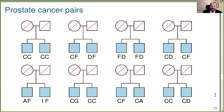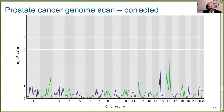If we fix that, the corrected results look like this. There's a hint of association on a couple of chromosomes — 15 and 16, maybe two — but nothing nearly so dramatic as what I'd initially seen. Actually, this is about what you'd expect, given the limited amount of data that we have.